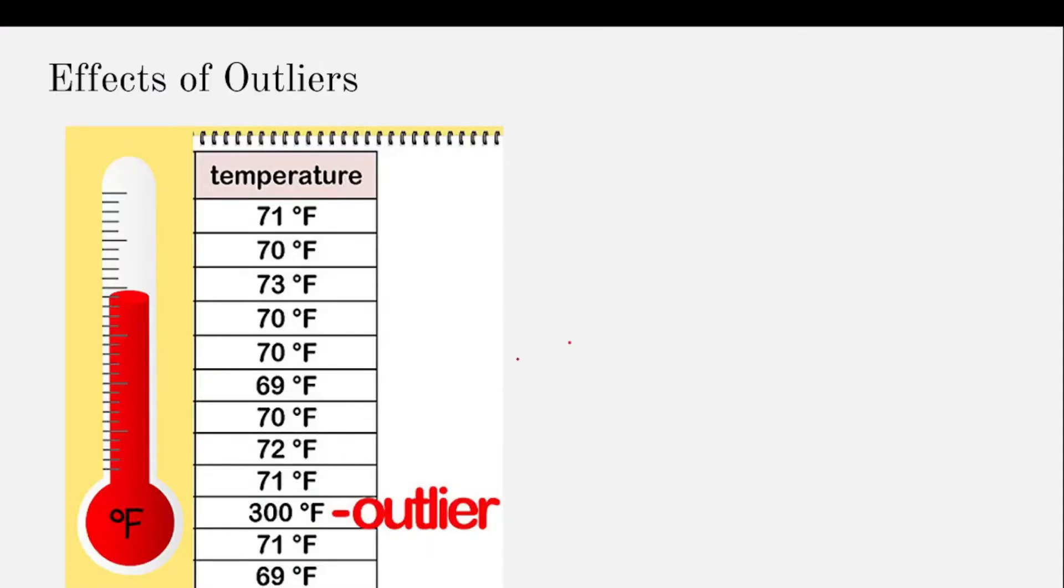Now let us see how the presence of an outlier affects my data interpretation. Here I am given temperature readings of different days. I can clearly see that 300 Fahrenheit is way different from all the other values, so this will be the outlier.